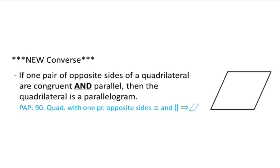Go ahead and put some stars around this next one. There wasn't a statement before about this, but this is another way to tell if a quadrilateral is a parallelogram. If one pair of opposite sides of a quadrilateral are congruent and parallel, then the quadrilateral is a parallelogram. So if one pair of sides — like the left and right sides — is both congruent and parallel, that tells you it's a parallelogram.